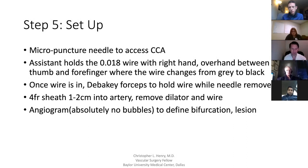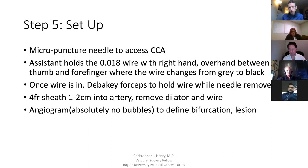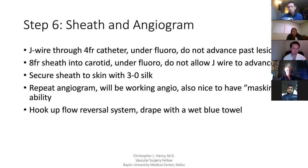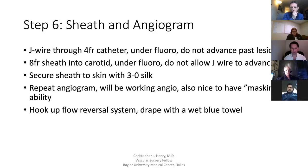Once the wire is in, he typically uses DeBakey forceps or a special titanium forcep to hold the wire as he removes the needle, then put in the 4-French sheath, take out the dilator and wire, and shoot a scout angiogram. Ensure there are no bubbles in the contrast — this gives a road map and a line to not cross when coming in with the J-wire. The rep in the room will mark that on the screen. Then advance the J-wire through the 4-French under fluoroscopy, and the rep marks the line; you don't go past that line as the operating surgeon is passing the 4-French catheter and exchanging for the 8-French sheath.